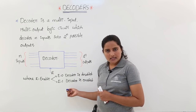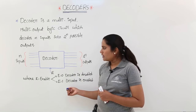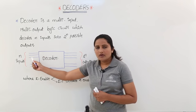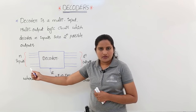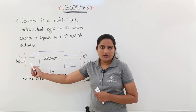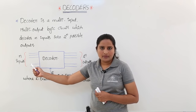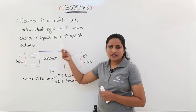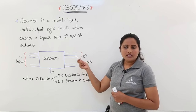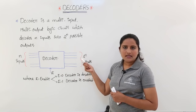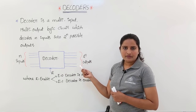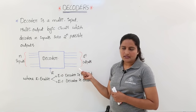If enable is equal to 0, the decoder is disabled — it is going to be off. If E is equal to 1, then only the decoder is enabled. When E is equal to 1, any one of the inputs is presented on one of the output lines.